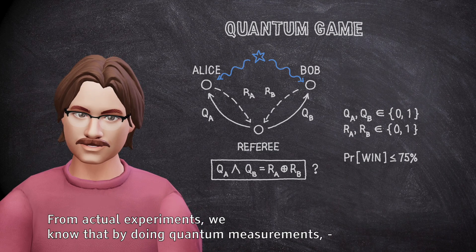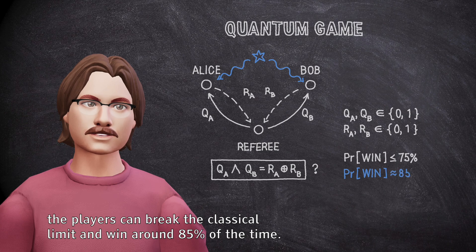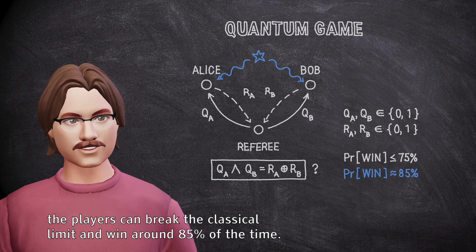From actual experiments, we know that by doing quantum measurements, the players can break the classical limit and win around 85% of the time.